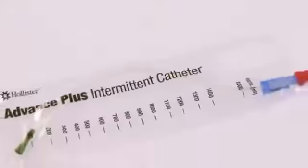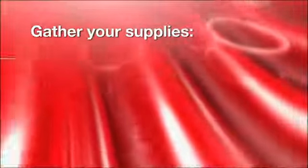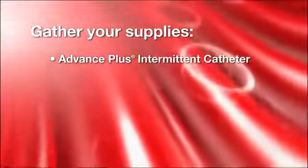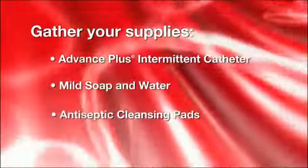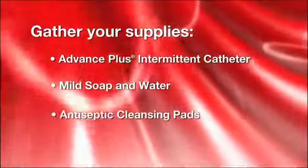To use the Advance Plus Intermittent Catheter System, first gather your supplies: the Advance Plus Intermittent Catheter System and mild soap and water or antiseptic cleansing pads, or whatever you have been taught to use for cleaning your genital area.